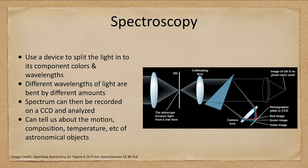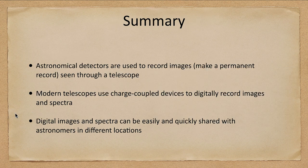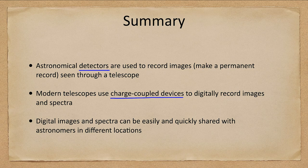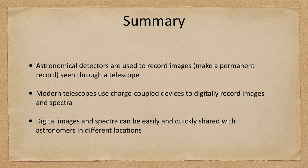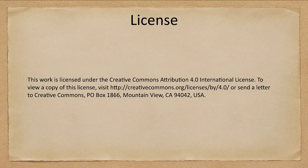So let's finish up with our summary. We've looked at the various astronomical detectors used to record images, making a permanent record of the objects that we have seen. Modern telescopes use a charge-coupled device — a CCD — to digitally record images and spectra, which can then be easily and quickly shared with astronomers in different locations. That concludes this lecture on astronomical detectors. We'll be back next time for another topic in astronomy. Until then, have a great day everyone, and I will see you in class.